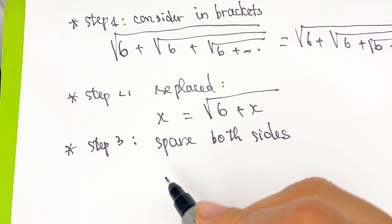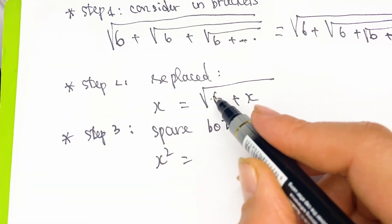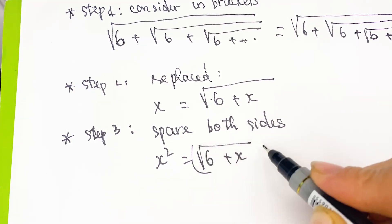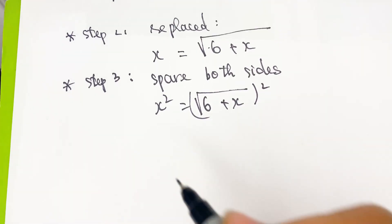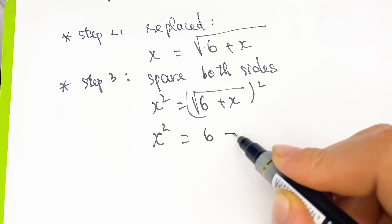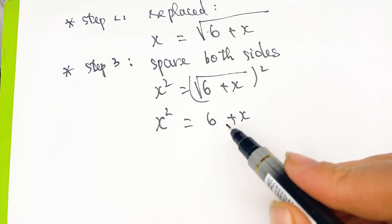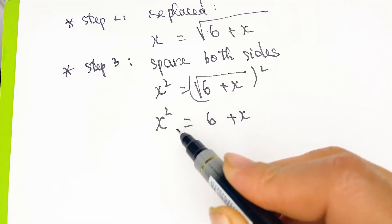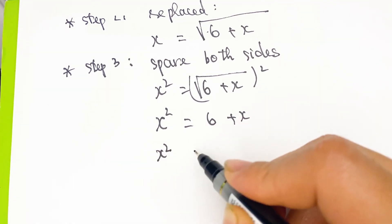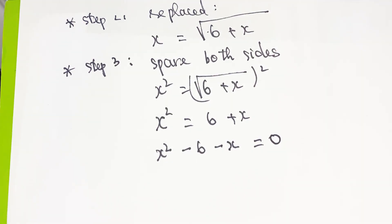We have x squared equals, square both sides, is equal to 6 plus x. And x squared equals 6 plus x. So next, you can move the right-hand side to the left-hand side, just change the side of the number. x squared minus 6 minus x equal to 0.